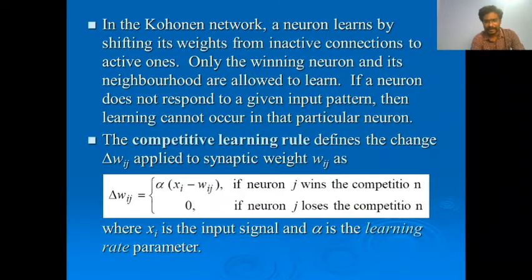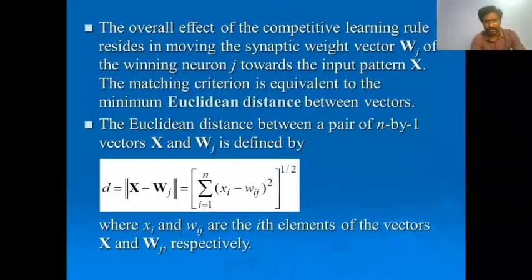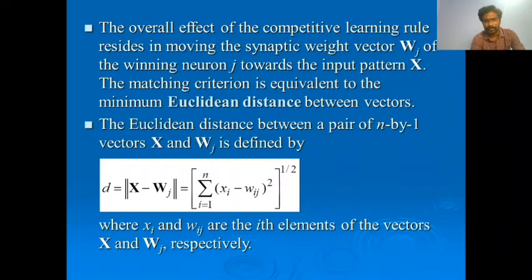Here, x_i is the input and α is the learning rate parameter. The Euclidean distance is calculated using the formula: d = |x − w_ij| = √(Σ(x_i − w_ij)²) for i = 1 to n. By this formula, we can calculate the distance between a pair of n neurons.